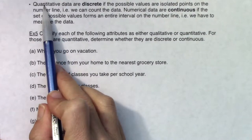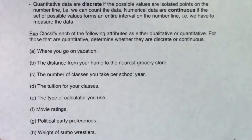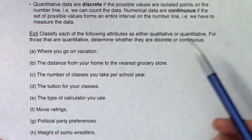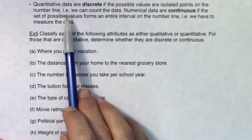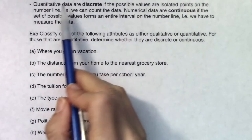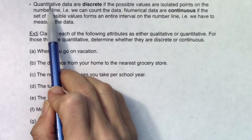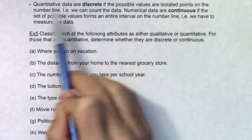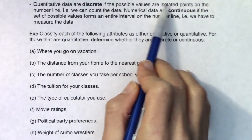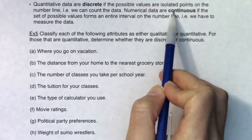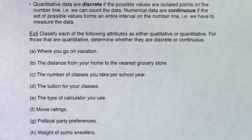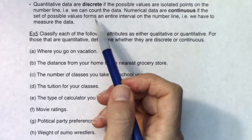If you are looking at a numerical variable we're going to further break that down. Some numerical variables are called discrete, some are called continuous. Quantitative data are discrete if the possible values are isolated points on the number line. Numerical data is continuous if the set of all possible values forms an entire interval on the number line.